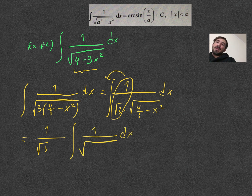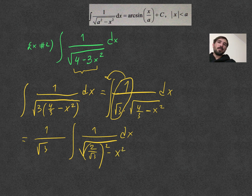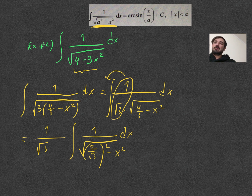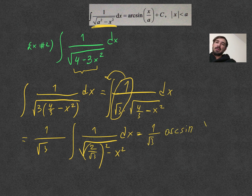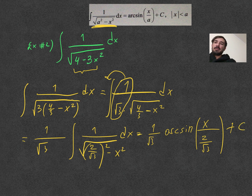Now 4/3 needs to be expressed as a perfect square. We can write it as (2 over square root of 3) squared, because 2 squared is 4 and (square root of 3) squared is 3, so nothing changes — we're just writing it in the form a squared minus x squared. At this stage, a equals 2 over square root of 3. So the result is: the constant 1 over square root of 3 outside, and then arcsin(x divided by (2 over square root of 3)).